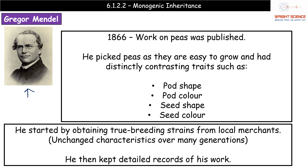The reason he picked peas wasn't just because he thought 'I'm a real pea lover, let's go with that.' He knew that they were easy to grow, and in addition to that, they had these very clear, distinct, contrasting traits. Basically when he was looking at them, they were either going to be one thing or another — any of these traits he picked had two options. Things like pod shape, pod color, seed shape, seed color — not an exhaustive list, but just four examples.